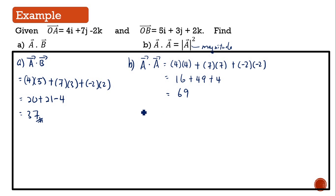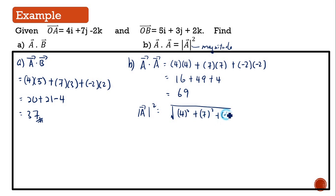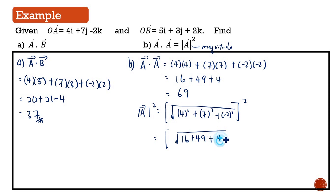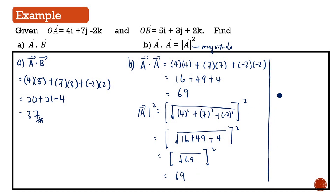Then the magnitude of a squared equals the square root of 4 squared plus 7 squared plus negative 2 squared, all squared. So you will get square root of 16 plus 49 plus 4, which equals square root of 69, squared equals 69. Therefore, vector a dot vector a equals magnitude of a squared. Both equal 69, so it is proved.